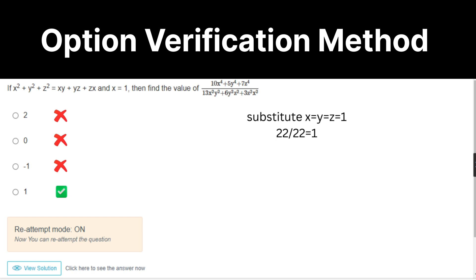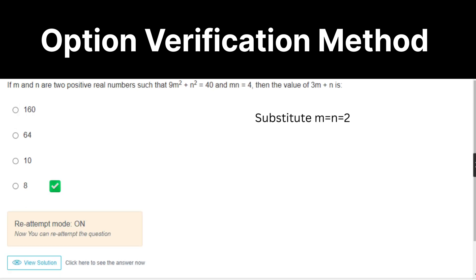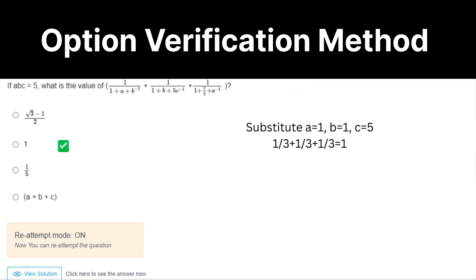Here, substitute theta equal to 0. 5 plus 3, 8. Again, m equal to n equal to 2. Here, a plus b plus c equal to 5. Which means we can substitute a equal to 1, b equal to 1, and c equal to 5. It will give you 1 by 3 plus 1 by 3 plus 1 by 3. That equal to 1.